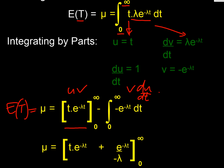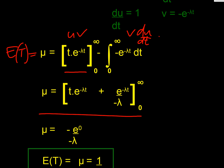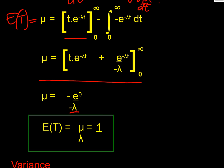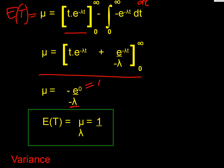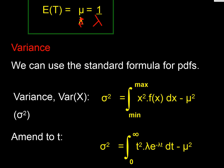Evaluating the integral: substituting infinity into the exponential term gives zero since e to the minus infinity is zero; substituting t equals zero into the boundary term also gives zero. The remaining term gives us a positive value, and therefore the mean — the expected value — is one over lambda. This makes sense: if we're expecting two buses per minute, we'd expect the first bus to arrive after half a minute.